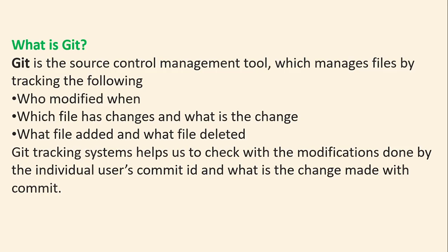What is Git? Git is the source control management tool which manages files by tracking who modified and when it was modified, which files have changed and what the change is, and what files were added and deleted. Git's tracking system helps us to check the modification done by the individual user's commit ID and what change was made with the commit.